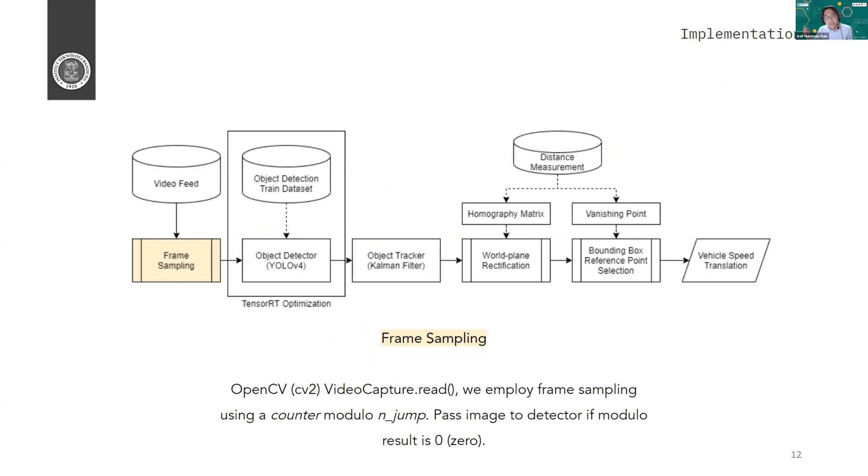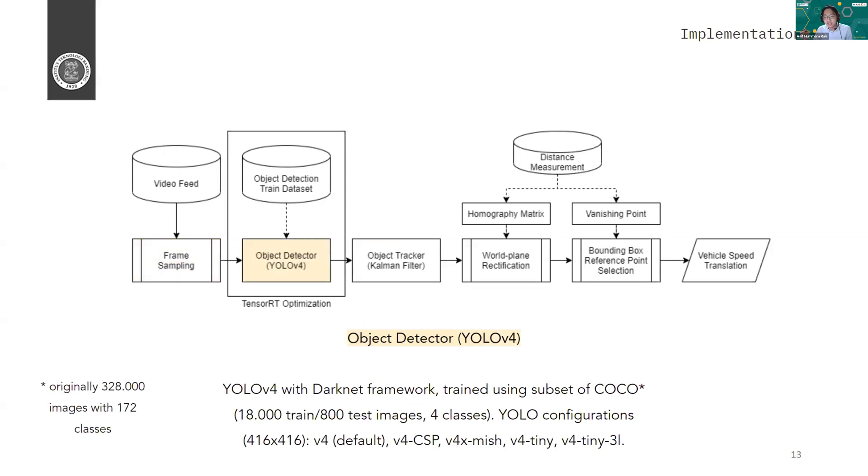And then the second part is using YOLO version 4, trained using subset of COCO with multiple configurations, as you can see on the slide, which are the P4 or the default one, the P4 CSP, the P4X Mish, the P4 tiny and P4 tiny 3L. So the COCO dataset originally has about 330,000 images with more than 100 classes, but we filter it to only vehicles. So we only have like 18,000 train images and 800 validation images with four classes, which are bus, cars, motorcycles, and trucks.